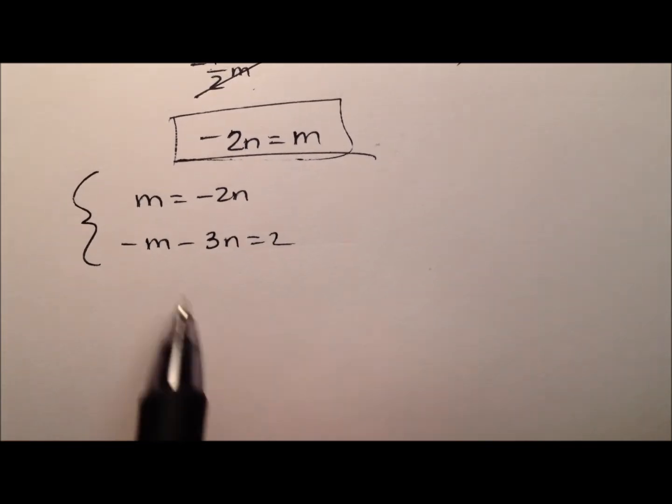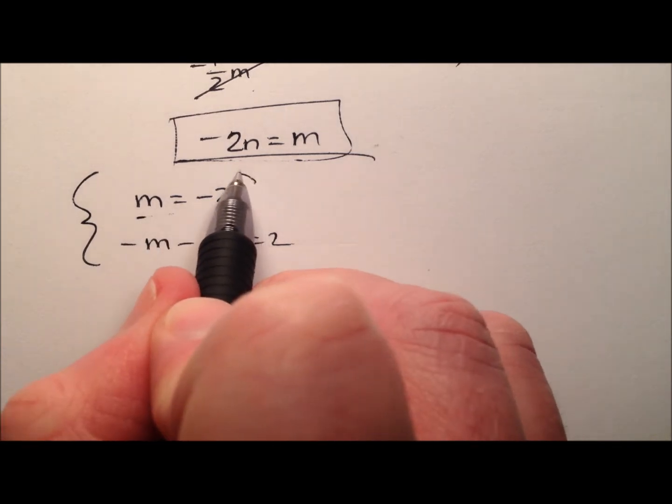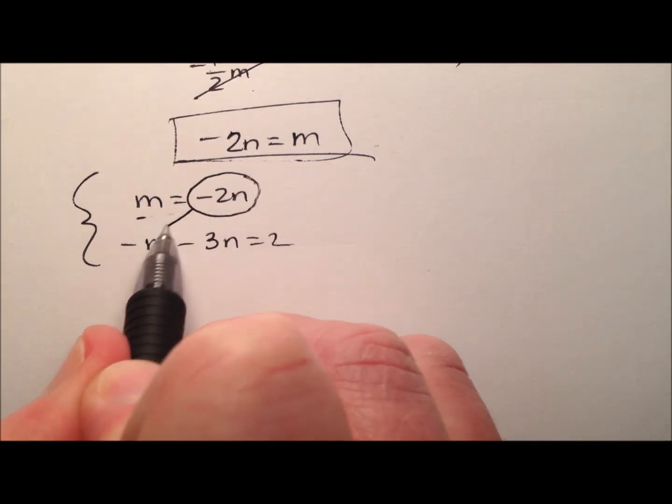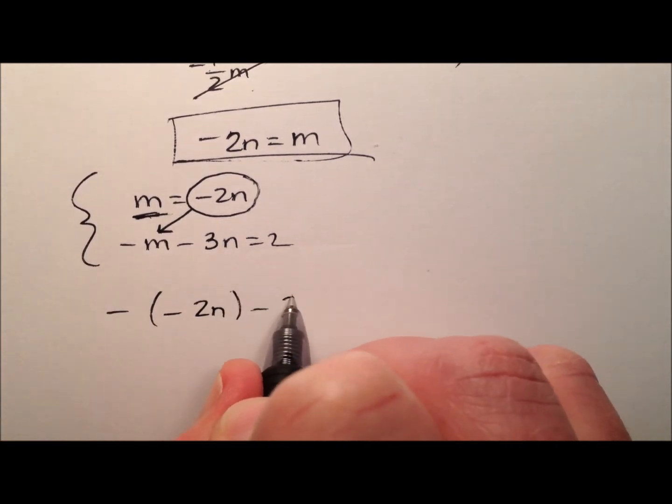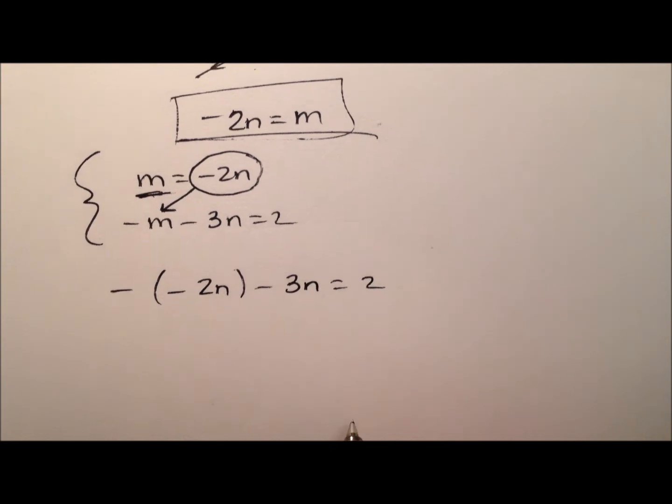So, I have m equals negative 2n and I also have negative m minus 3n equals 2. So, it's a nice system. I can use substitution on it. I'll go ahead and substitute this negative 2n in for m. So, it will look like this minus 3n equals 2.